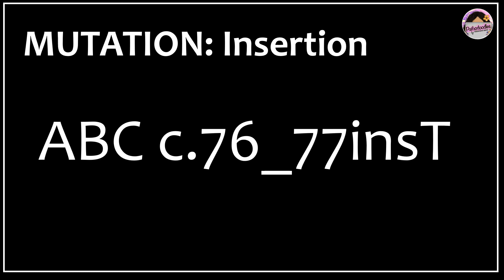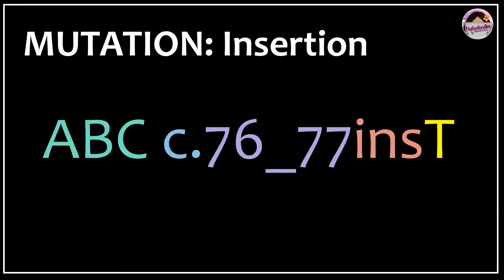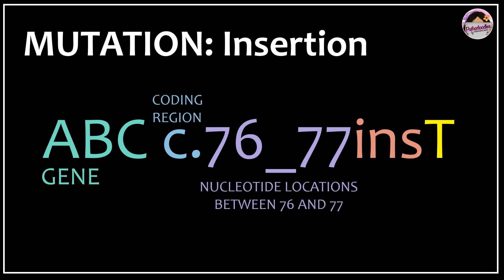Now look at this insertion example. For the ABC gene: c.76_77insT. 'c' stands for coding region; 76 to 77 means we are talking about something between the 76th and 77th nucleotide; 'ins' tells you there's been an insertion; and 'T' tells you what has been inserted — thymine has been inserted between the 76th and 77th nucleotide. This will change the reading frame, resulting in a frameshift mutation.